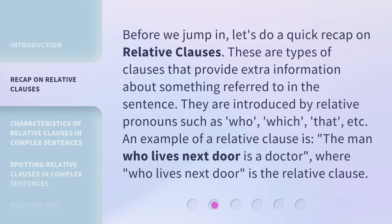Before we jump in, let's do a quick recap on relative clauses. These are types of clauses that provide extra information about something referred to in the sentence. They are introduced by relative pronouns such as who, which, that, etc. An example of a relative clause is: 'The man who lives next door is a doctor,' where 'who lives next door' is the relative clause.